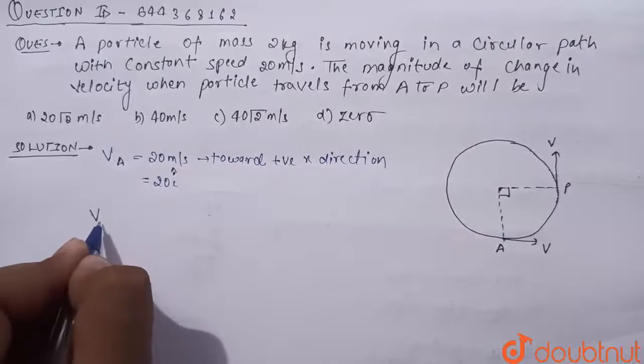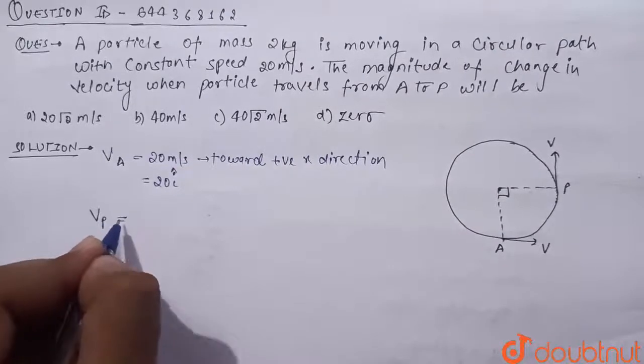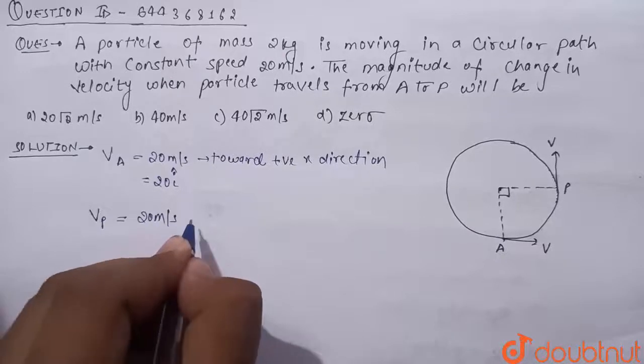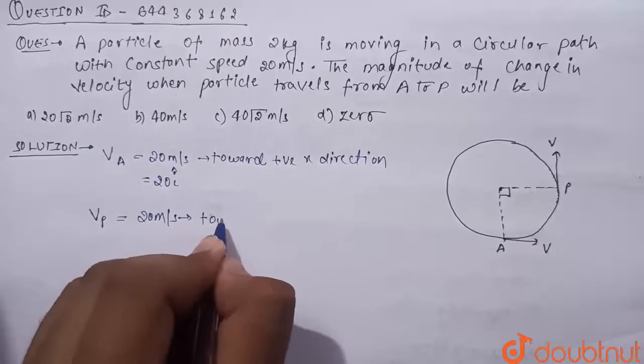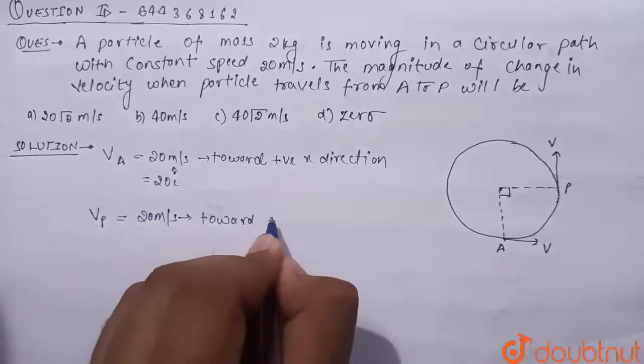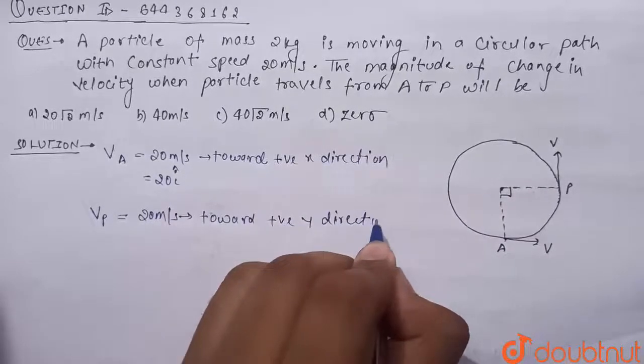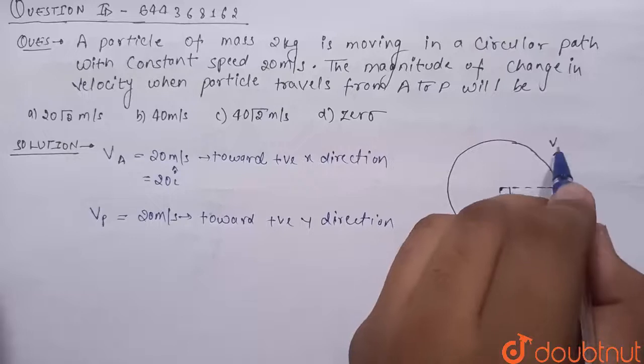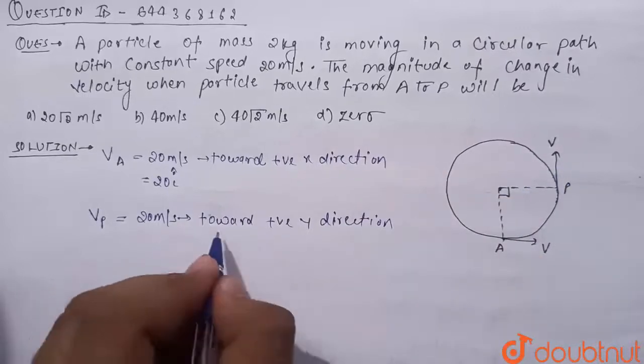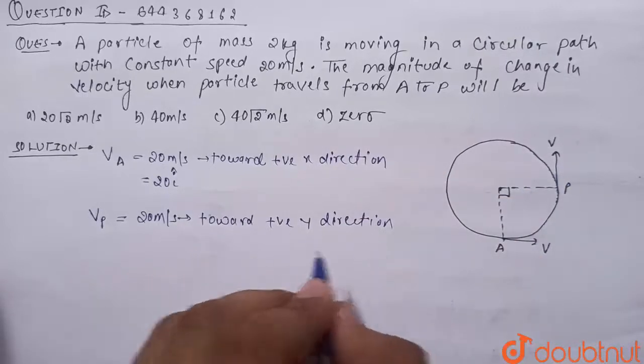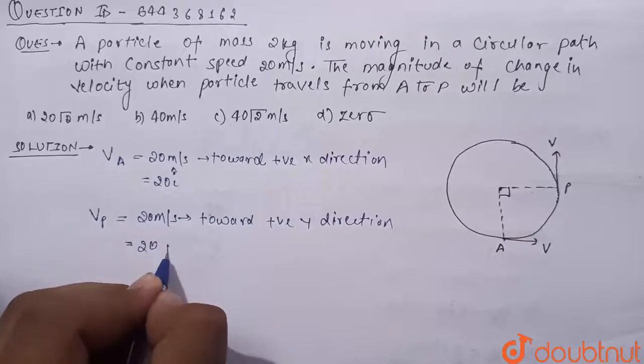Now what is velocity at point P? It will be 20 meter per second toward positive y direction, because at point P it is toward y direction. So we can write it as 20 meter per second toward positive y direction or 20j cap.